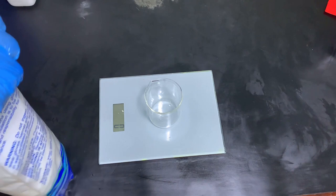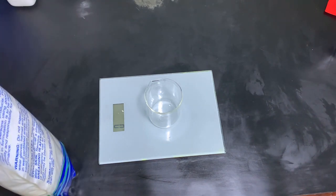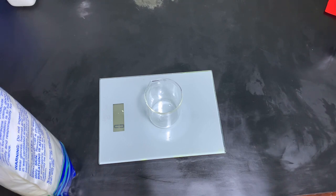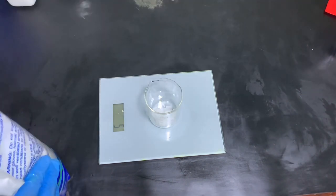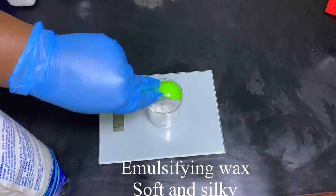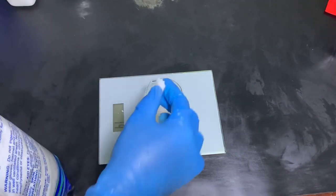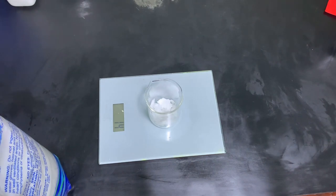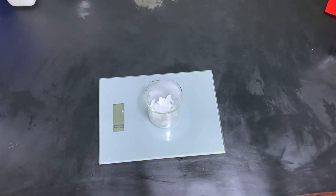We'll be using an emulsifier, which simply ensures that your water and oil are mixed properly. When you pour water in oil, the oil floats and the water is at the base. We're using this emulsifier called Soft and Silky, from Crafter's Choice.